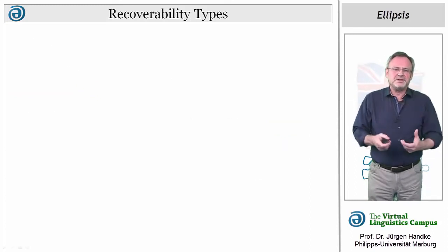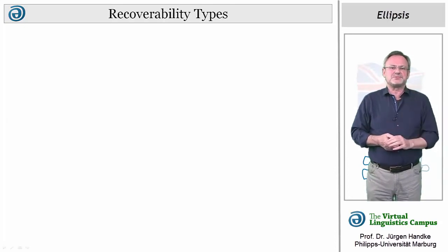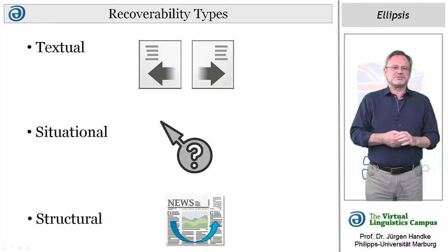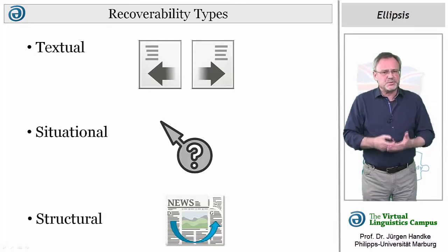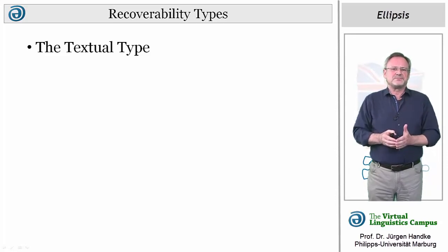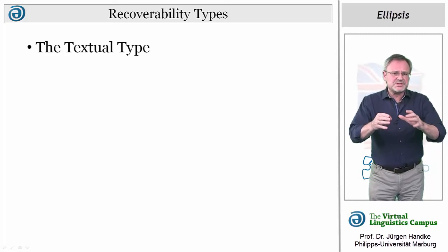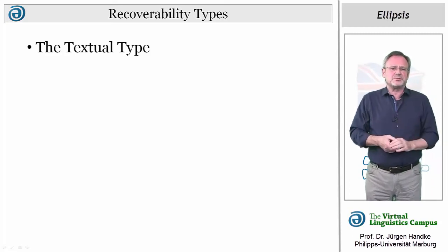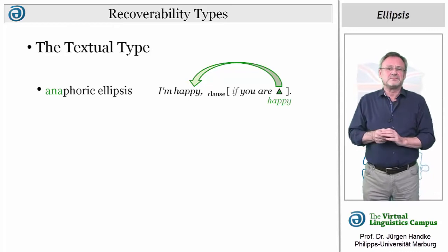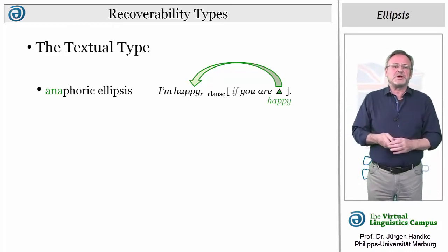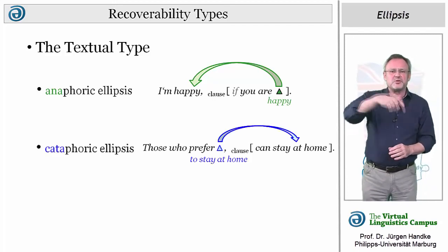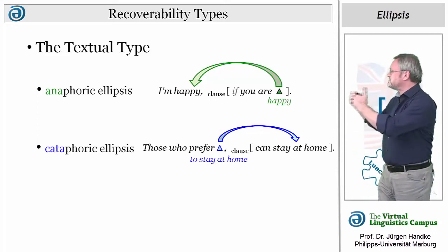The recoverability types of ellipsis can be distinguished into three subtypes: textual ellipsis, situational ellipsis, and structural ellipsis. In sentences with textual ellipsis, the interpretation depends on what is said or written in the linguistic context. Relative to the positions of the ellipsis and its antecedent, two types can be distinguished: anaphoric ellipsis, as in 'I am happy if you are,' where the interpretation depends on what comes before; and cataphoric ellipsis, where the interpretation depends on what follows, as in 'Those who prefer can stay at home.'